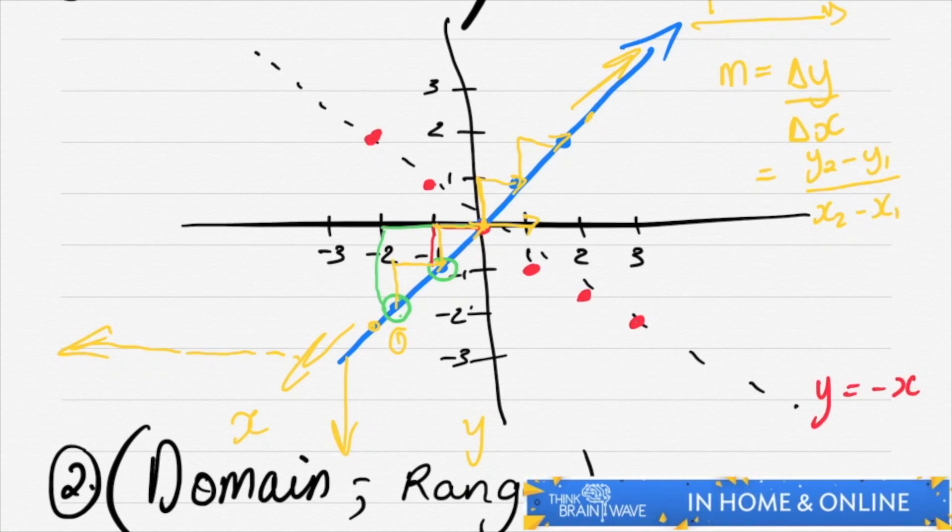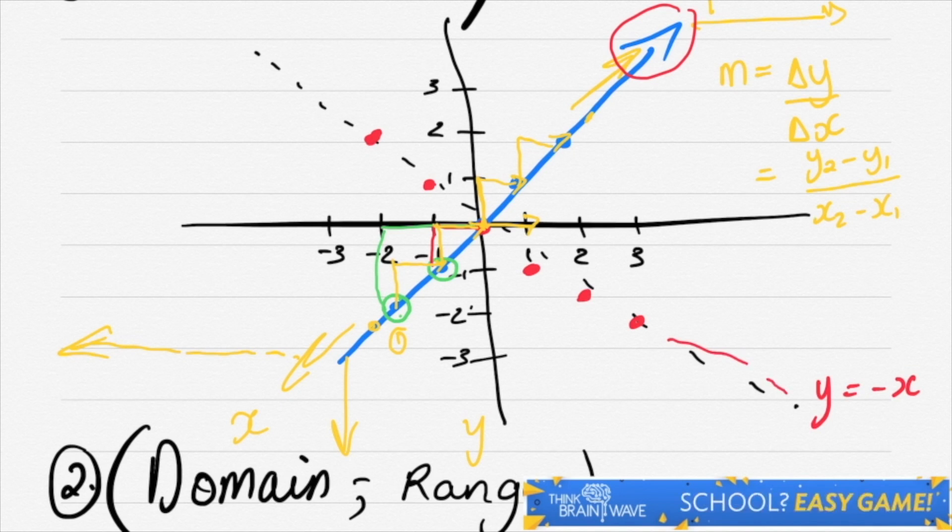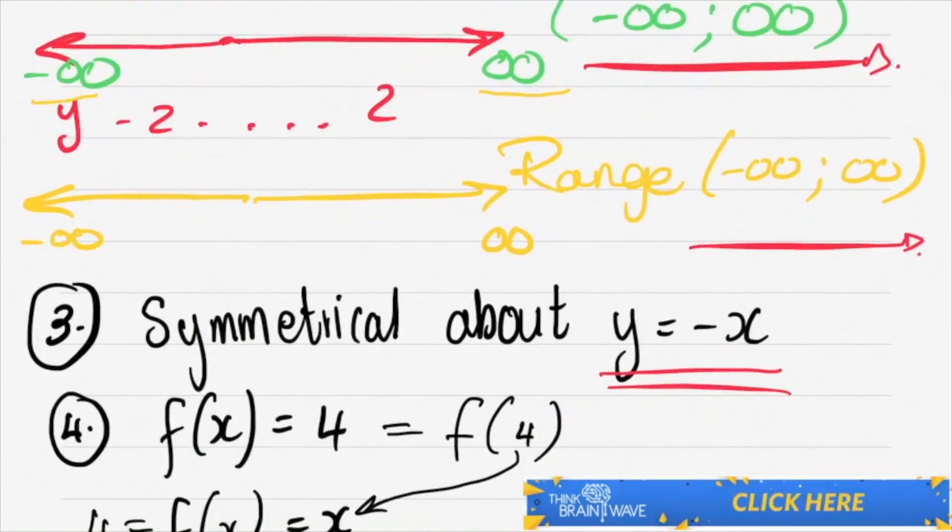This line over here with the red dots is the y is equal to negative x line. That is because if you were to flip this arrowhead across this line over here, it would be this line over here pointing in that direction. So hence, we know that it is y is equal to negative x that it is reflected upon.